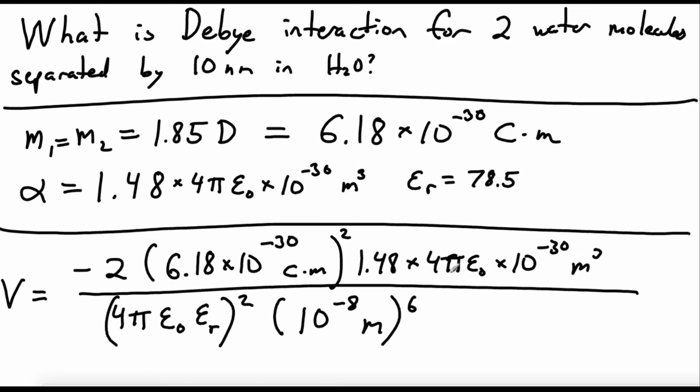And let's go ahead and cancel one of these 4 pi epsilon naughts with one unit of 4 pi epsilon naught in here.